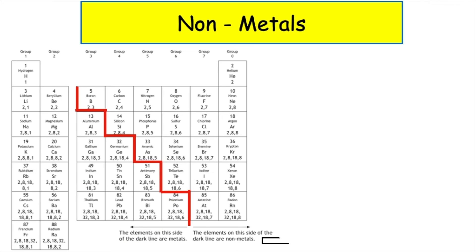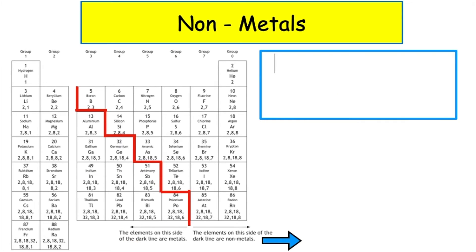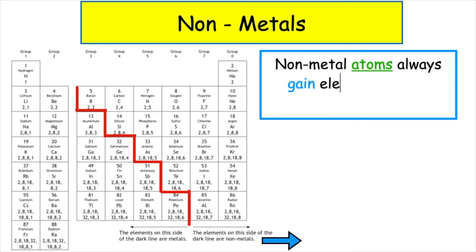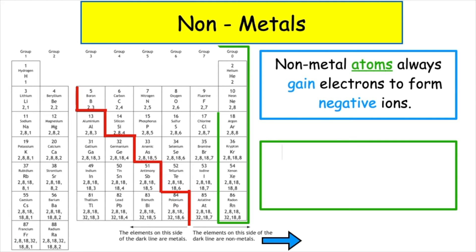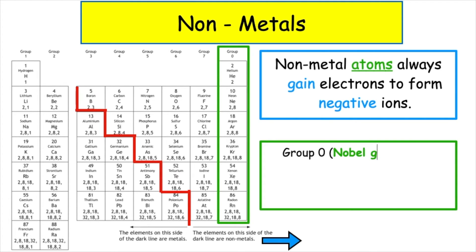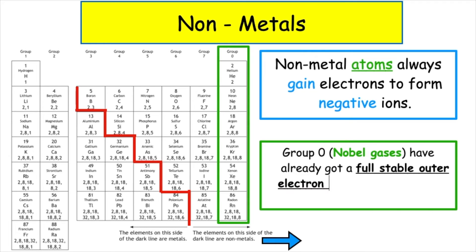Non-metal elements can be found on the right-hand side of the periodic table. Non-metal atoms always gain electrons to form negative ions. Group 0, however, have already achieved a full, stable outer electron arrangement, so will never form an ion.